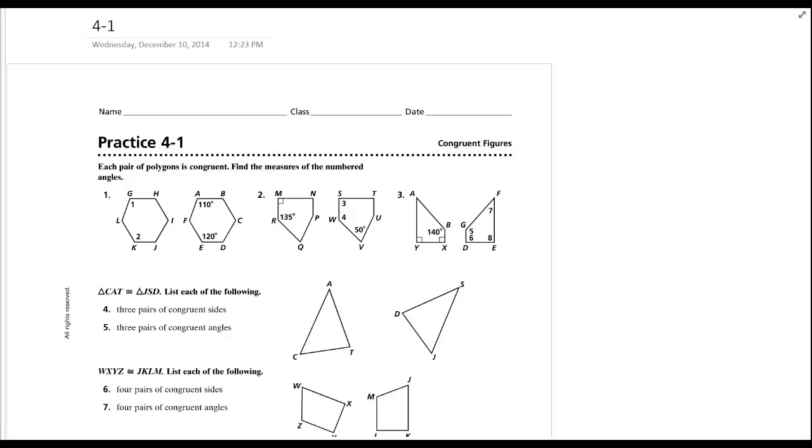Practice 4-1. We start off knowing that each pair of polygons is congruent, so now we need to find the measures of the numbered angles.